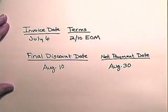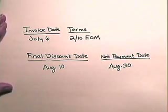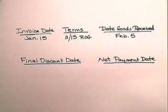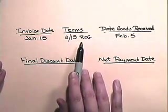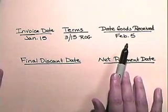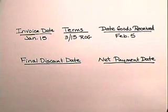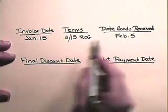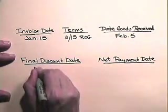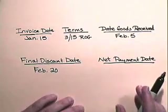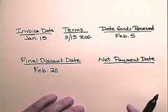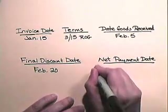The net payment is due 20 days after the last discount date. Now let's look at receipt of goods dating. Receipt of goods dating means that cash discounts are determined from the date on which the goods are actually received. In this exercise, the invoice date is January 15th, terms are 3/15 receipt of goods, but the goods were not received until February 5th, so the final discount date will be February 20th — 15 days after February 5th.